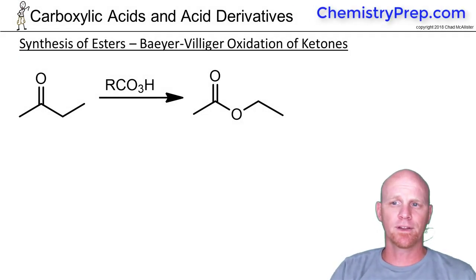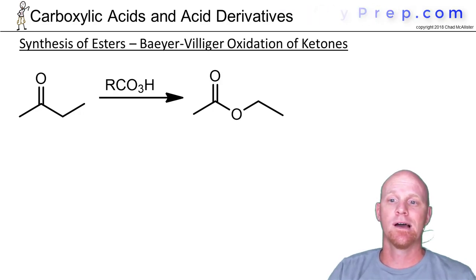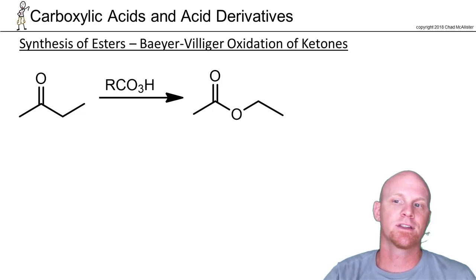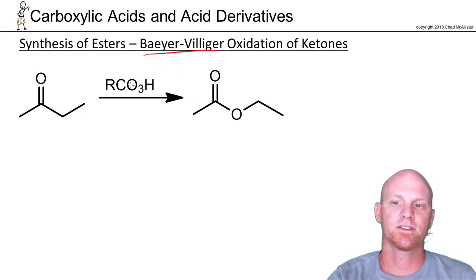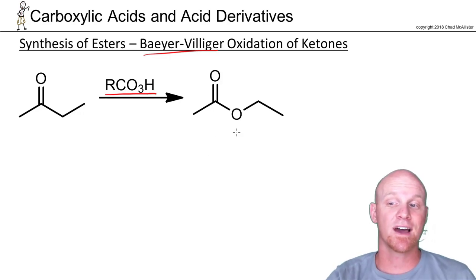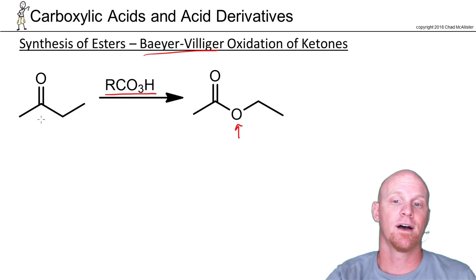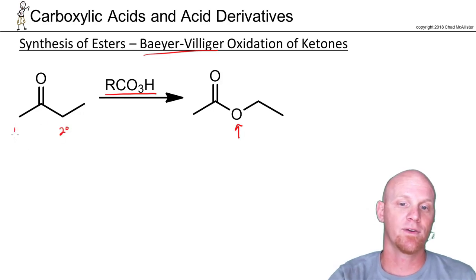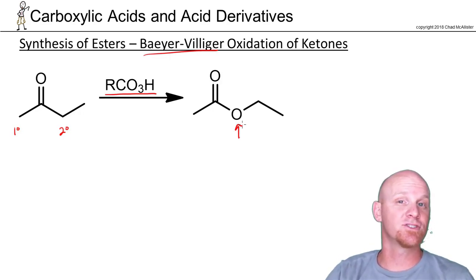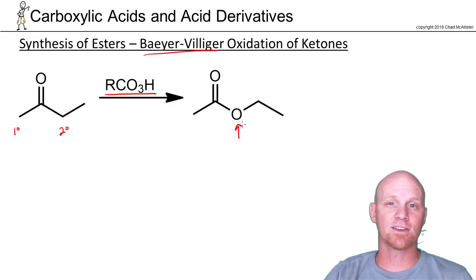Now we'll take a look at esters, and there's a little more chemistry involved with esters than there were for acid chlorides or acid anhydrides. We'll start with some synthesis and a lot of review. The first is the Baeyer-Villiger oxidation, where we add a peroxy acid and in this case the oxygen inserts itself on the more substituted side — that's why it ends up on the right side where we had a secondary carbon instead of a primary carbon — to give you an ester.